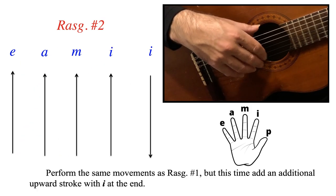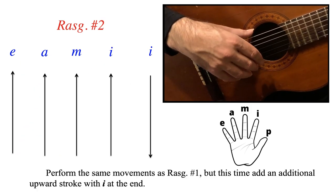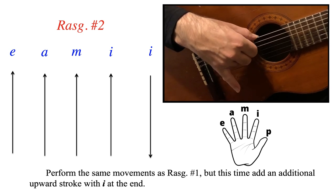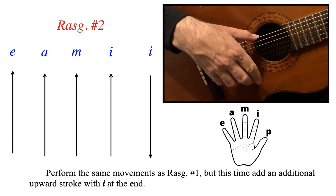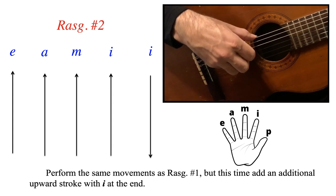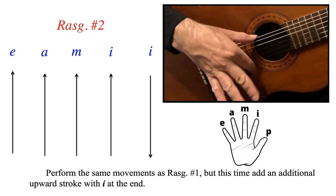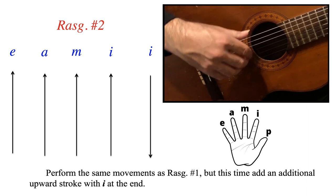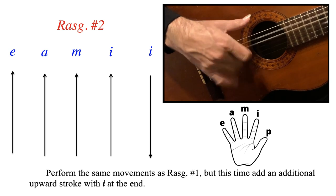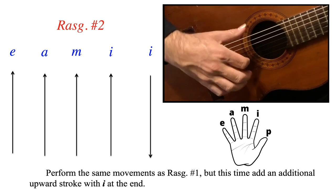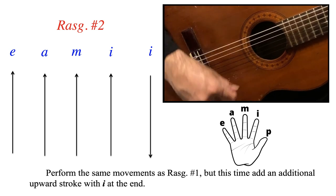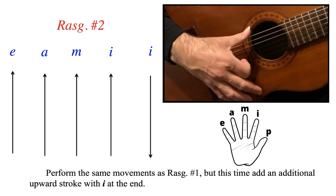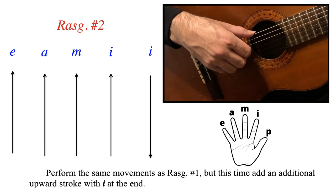Rasqueado number 2 is similar to number 1, but I'm going to add an upward I at the very end, so I have downward E, A, M, I, and upward I. You could use this in a multitude of palos including Verdiales, and of course you could use it in Soleales.